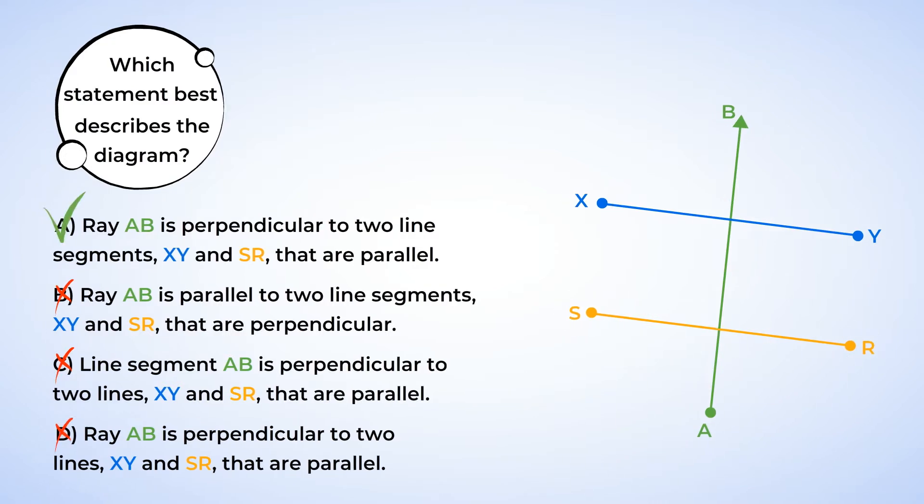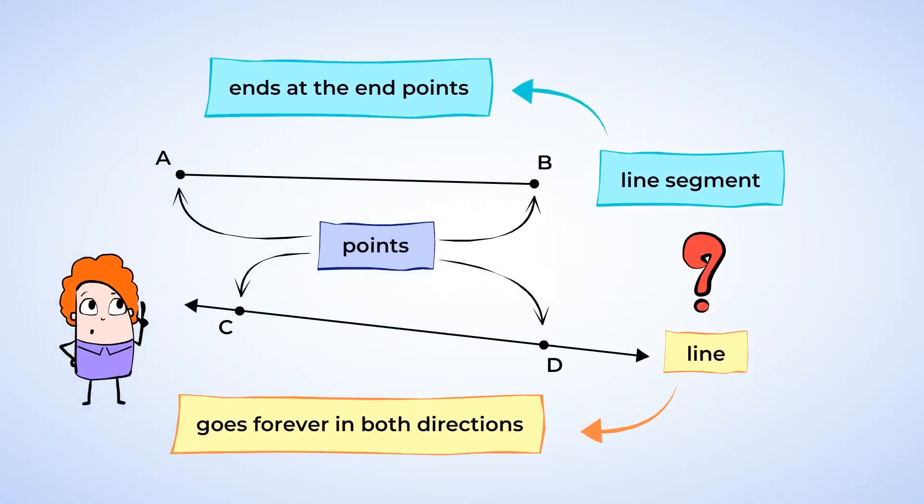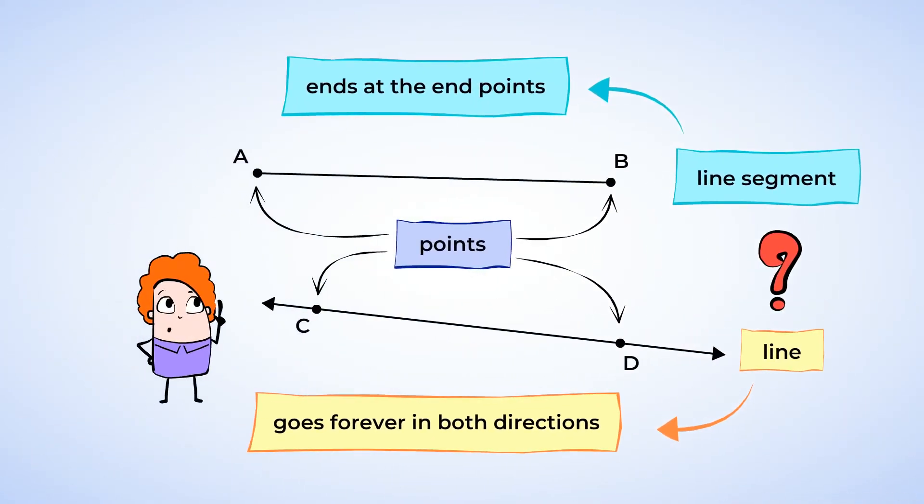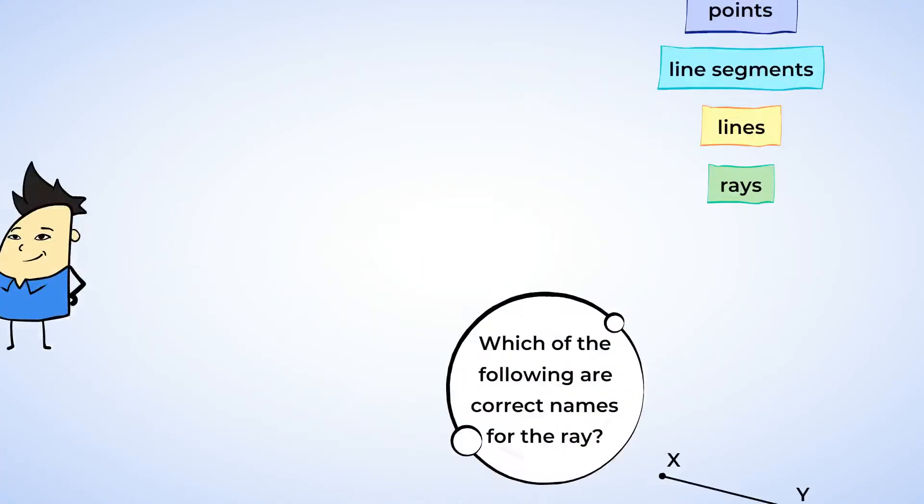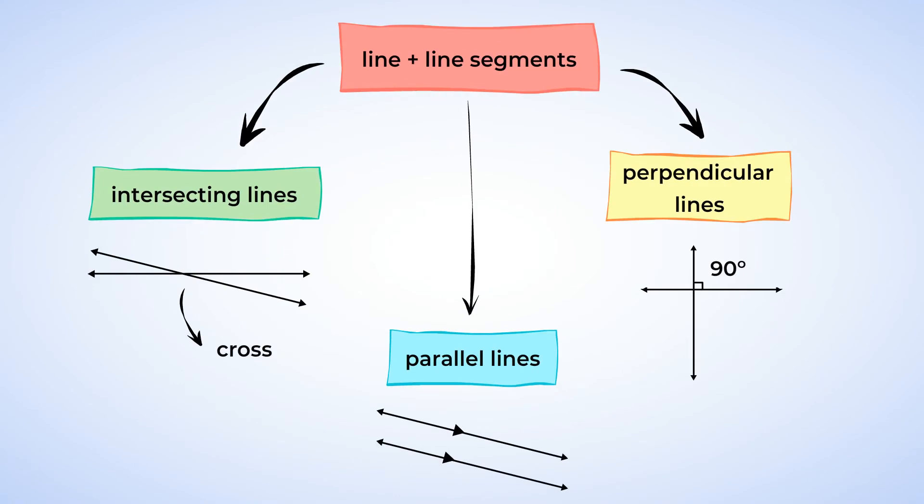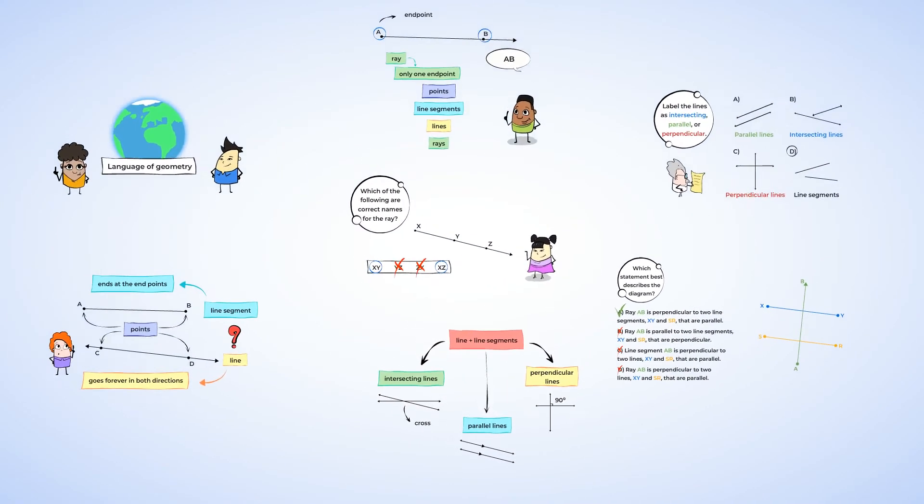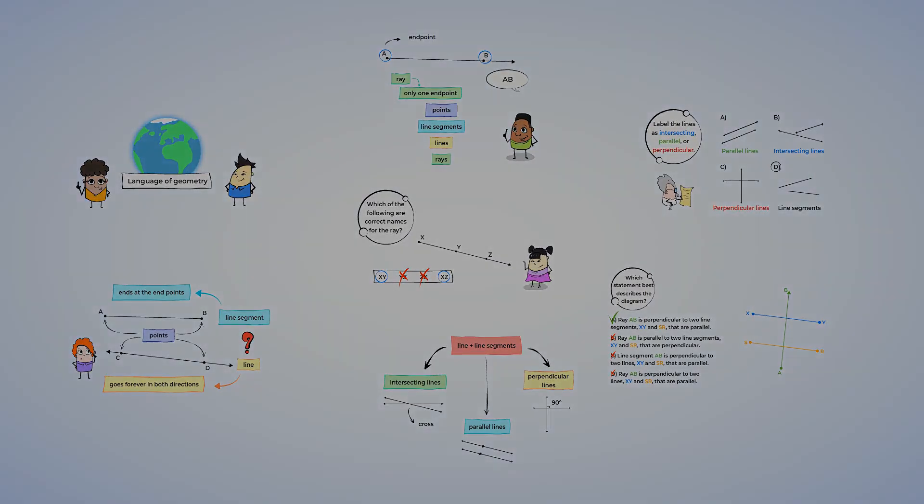That was a doozy! You did a great job learning the language of geometry! Now you're able to identify and label points, lines, line segments, and rays. And we also learned about intersecting, parallel, and perpendicular lines. See you in the next mighty lesson!